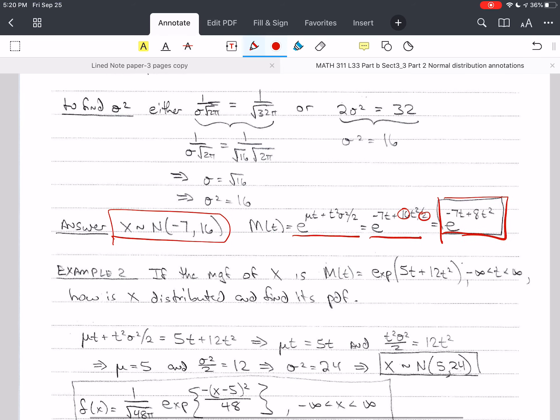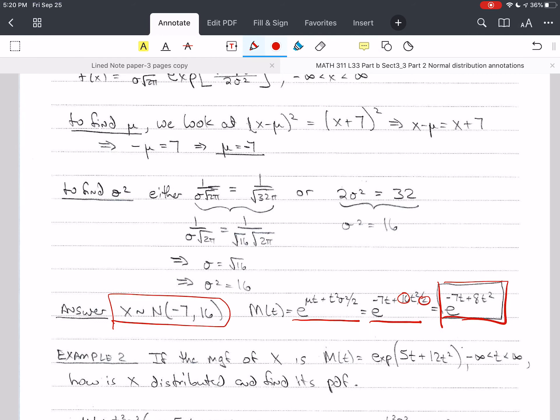Let's look at a second example. If the moment generating function is given by this equation, remember that moment generating functions are unique. So if two distributions have the same moment generating function, they're the same distribution.